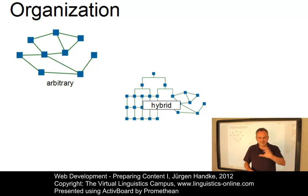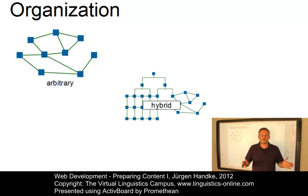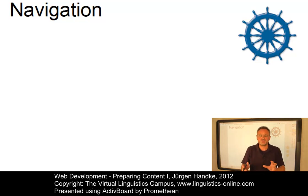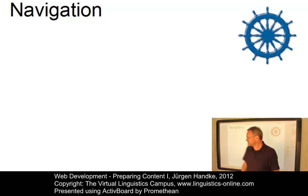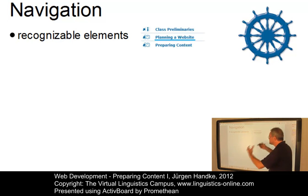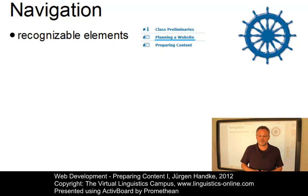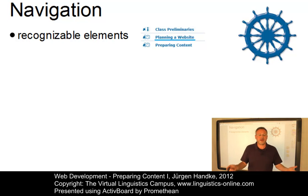Having introduced the various possibilities of organizing content, let us now turn to the main principles of navigation. Once the content has been organized, creating navigation should be an easy task. However, there are a few points to take into account when designing navigation elements. For example, the elements used in navigation should be recognizable by users — links should be bold or underlined, and buttons should be distinguishable from the rest of the design, for example by adding a drop shadow.